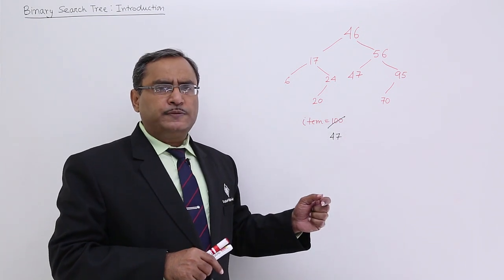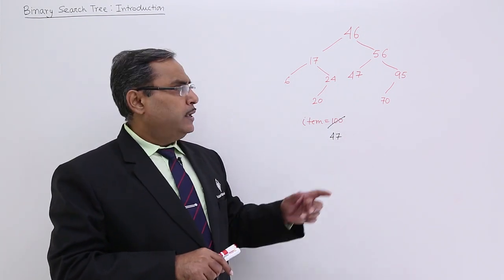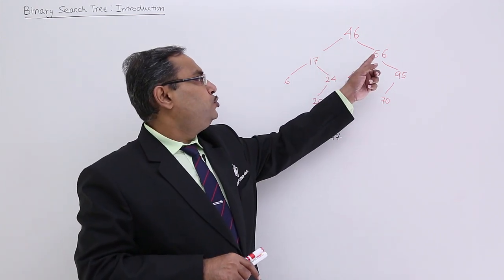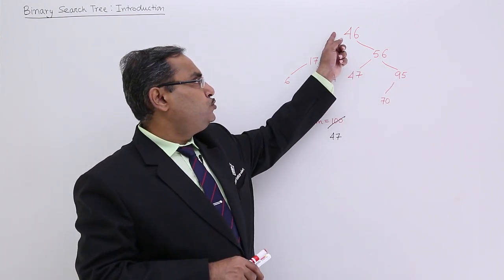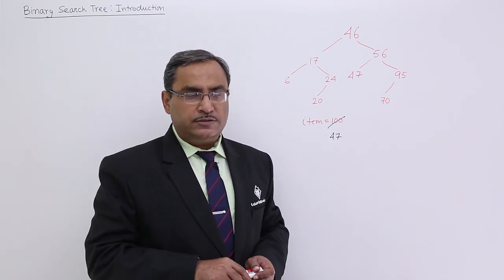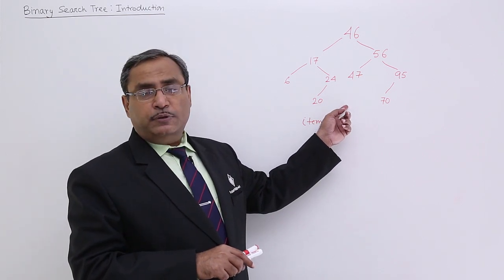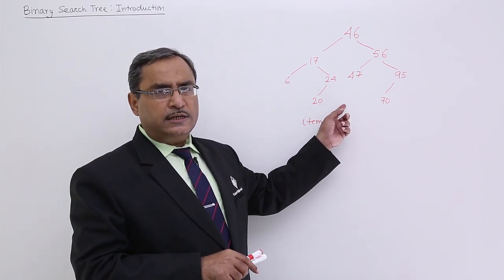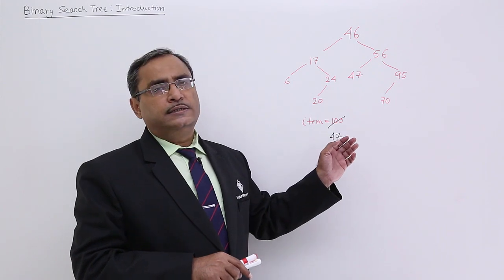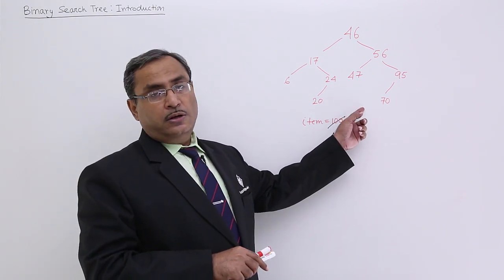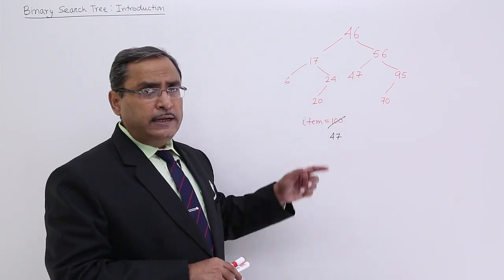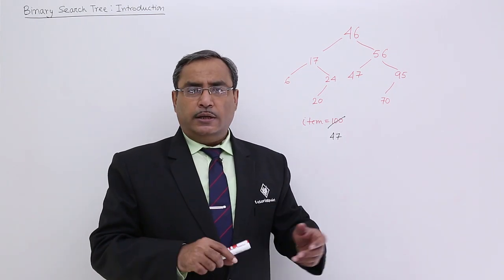How many maximum number of searches will be required? That will decide the complexity, and it will be decided by the depth of the binary search tree. Here, the maximum depth is 4 — that is, from the root node to the leaf node, the maximum number of nodes on the path is the depth. Since this tree has a depth of 4, maximum 4 searches will be required to declare whether the item is found or not. That is the worst case complexity — the depth of the binary search tree.